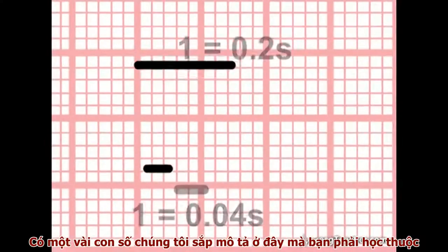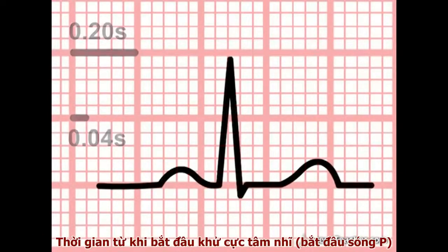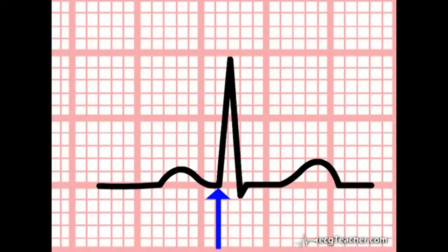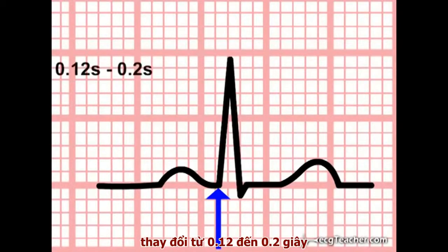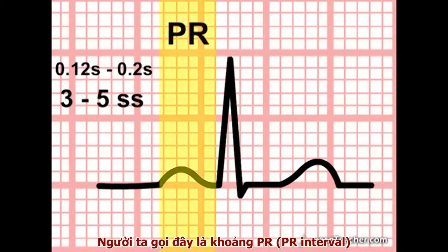There are a few numbers coming up now which you simply must learn. In a normal heart, the time between the onset of atrial depolarisation — the beginning of the P wave — and the onset of ventricular depolarisation — the beginning of the QRS complex — varies between 0.12 and 0.2 seconds, or between three and five small squares. This is the PR interval.